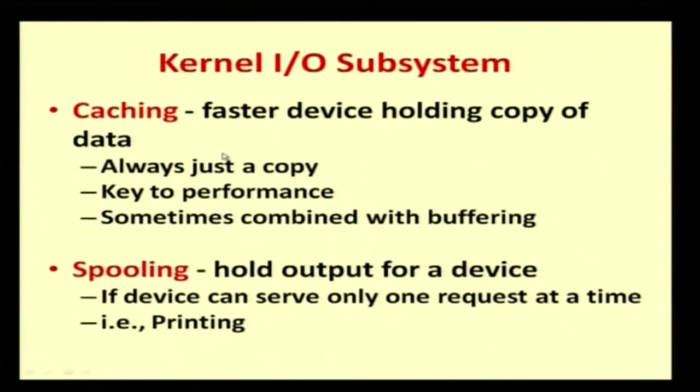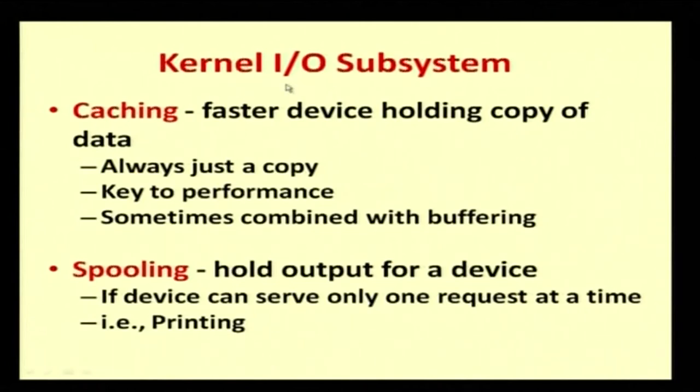The third kernel I/O subsystem is caching. Cache memory is a faster device holding a copy of data — a small amount of memory like a buffer. If you play a 35-minute video, the secondary disk cannot run at RAM speed, so the first 3 minutes are placed in cache memory. From cache, data goes to main memory for execution. This is faster than working directly from secondary memory. That is cache memory as part of the kernel I/O subsystem.